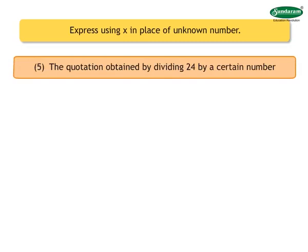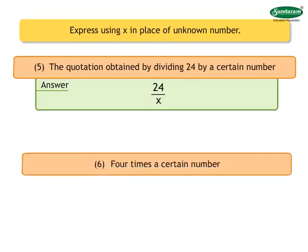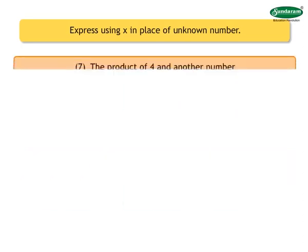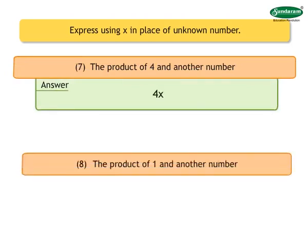Number 4: The quotient obtained by dividing a number by 24. Answer: x upon 24. Number 5: The quotient obtained by dividing 24 by a certain number. Answer: 24 upon x. Number 6: 4 times a certain number. Answer: 4x. Number 7: The product of 4 and another number. Answer: 4x. Number 8: The product of 1 and another number. Answer: x.